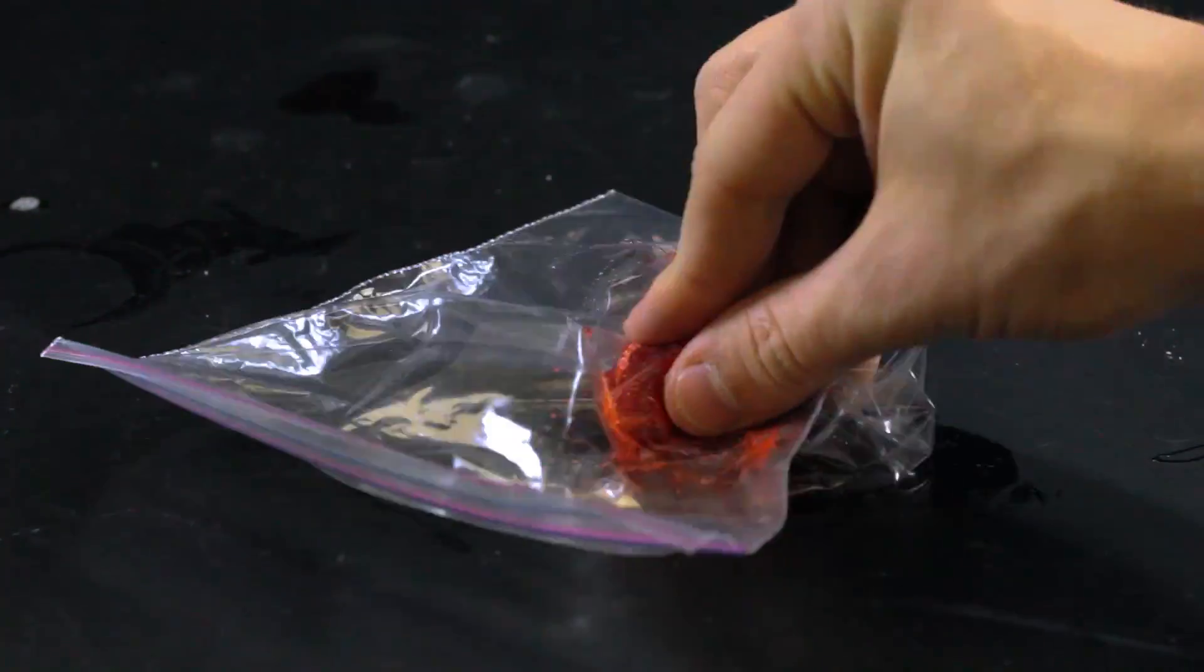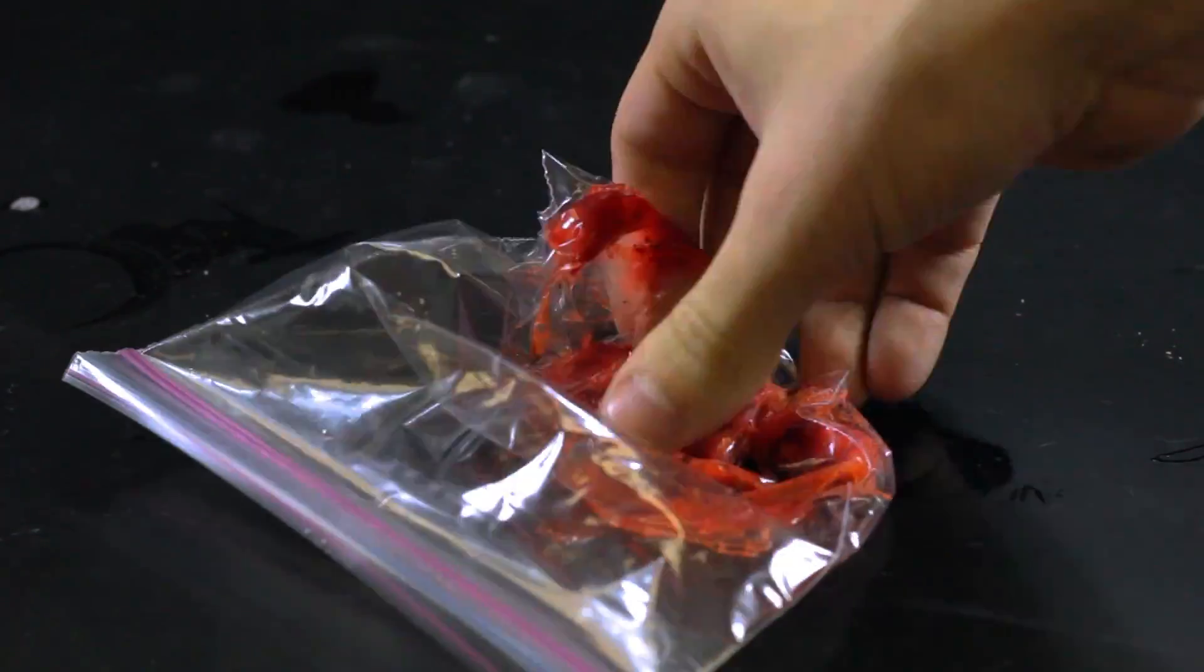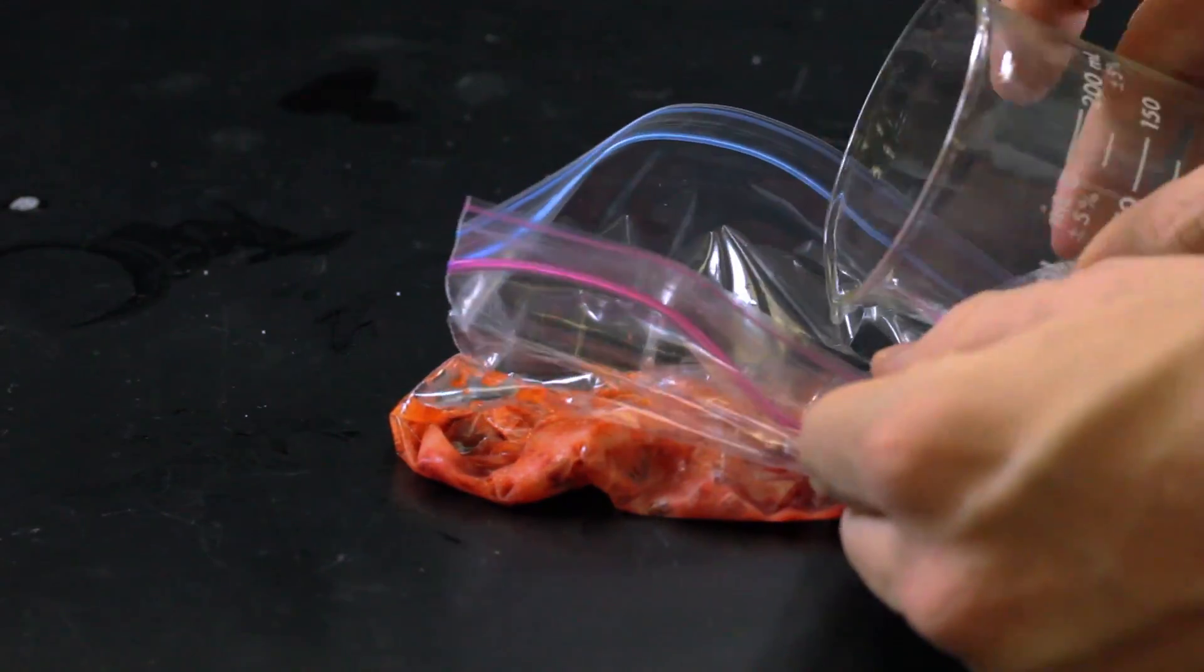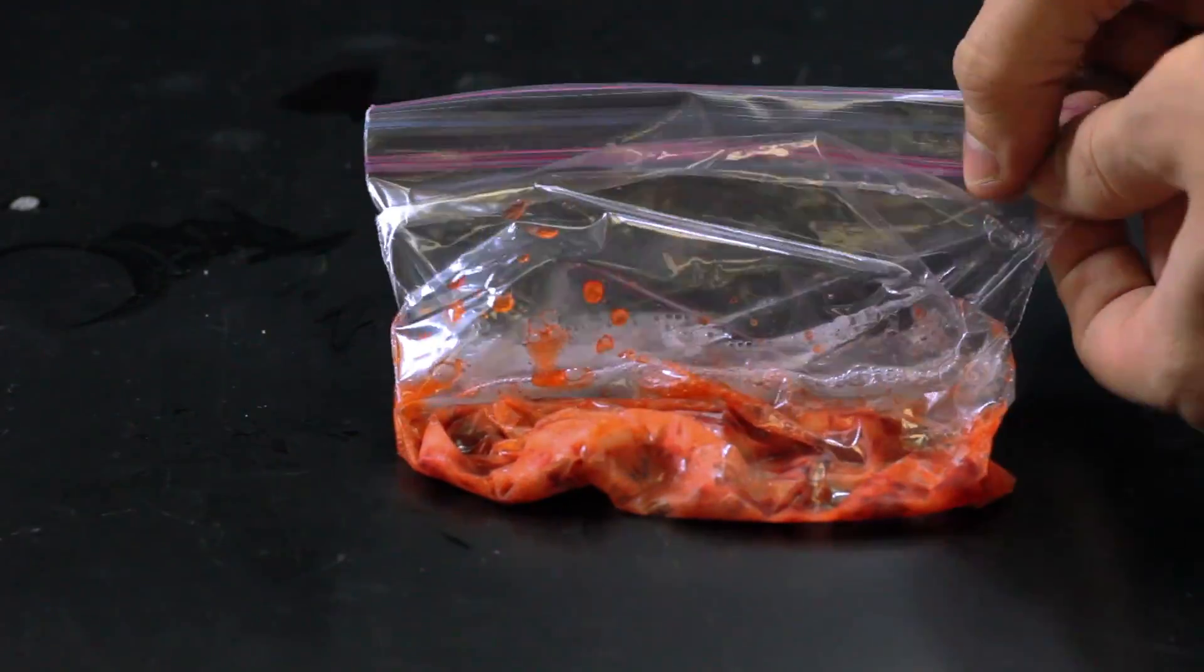Place a strawberry into a plastic bag and then mush it up until there are no lumps left. Now add the extraction buffer to the bag and mix them together for about 30 seconds.